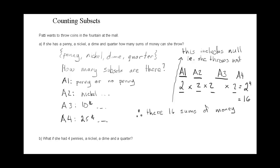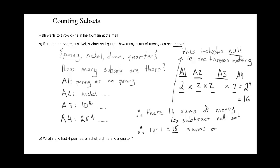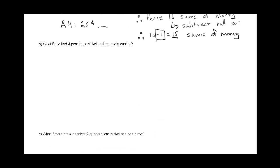In this case, because the question says how many sums of money can she throw, it's almost suggesting she has to throw something. So we want to subtract the null set, because it doesn't make sense to include it as a sum of money. Therefore, sixteen minus one equals fifteen sums of money. When doing questions like this, it depends on the context whether or not you subtract the null set.